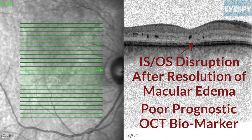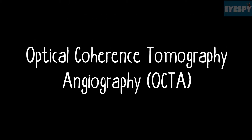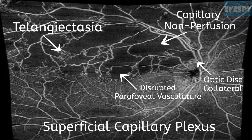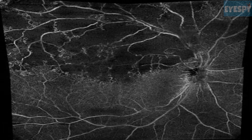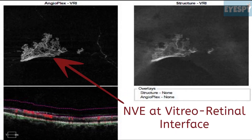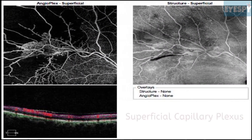On OCT angiography, capillary non-perfusion, telangiectasia, disrupted parafoveal vasculature, and optic disc collaterals may be seen on the superficial capillary plexus. Capillary non-perfusion areas are more markedly seen in the deep capillary plexus. Presence of blood vessels at the vitreoretinal interface is suggestive of neovascularization.